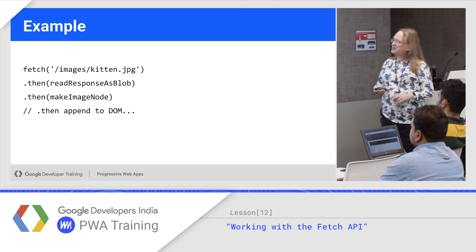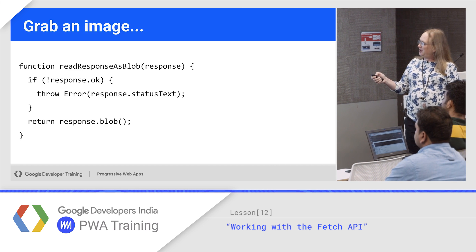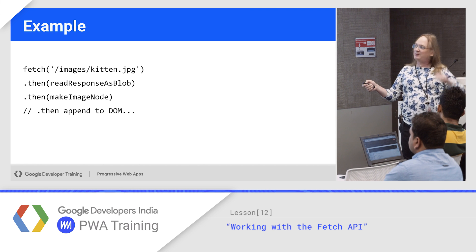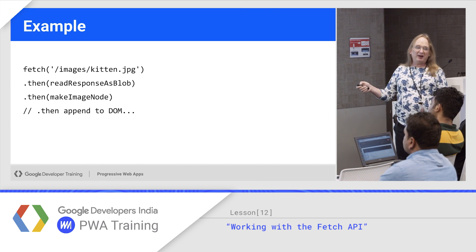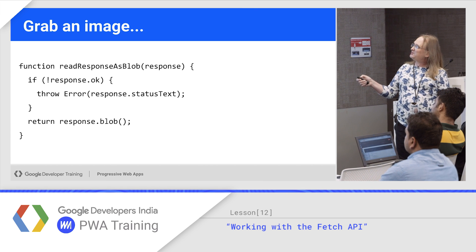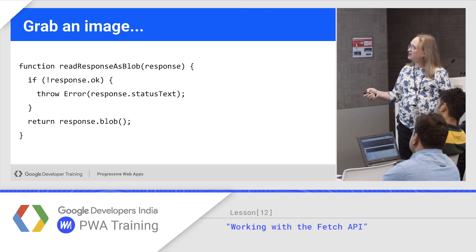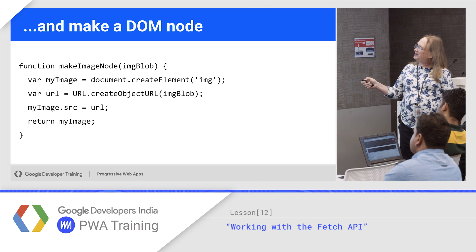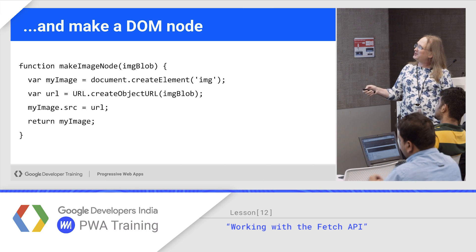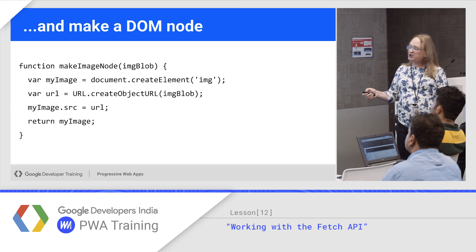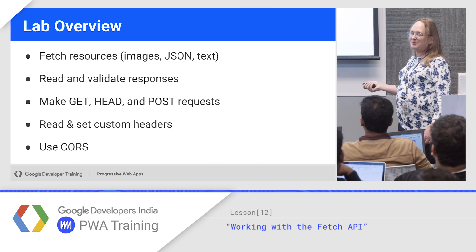Here's a more full example of handling an image. We'll do a fetch for a cute kitten picture, pass that down the pipe to read response's blob — which takes the response and gives you a binary object. Then we turn that into something you can append to the DOM. The readResponseBlob function checks if the response is bad and throws the exception; otherwise, it unpacks the blob. The next thing in the chain takes the blob, creates an image element, creates an object URL, sets the source to that URL, and returns the element. Remember that when you do document.createElement, it's not yet attached to the DOM — it's floating freely, but you now have an image node you can attach somewhere. That's a nice easy lab to get your morning started.